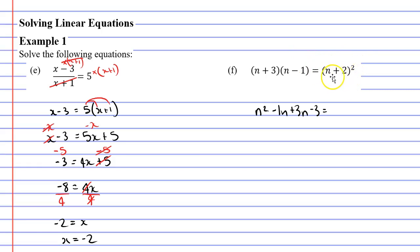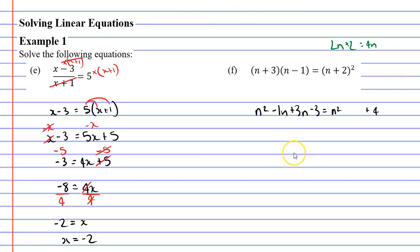Let's expand the next set of brackets: (n plus 2) squared is a perfect square. We square the first term to get n squared, square the last term — 2 squared is 4 — so we get plus 4. We multiply the two terms: n times 2 is 2n, then double it to get 4n as the middle term. Simplifying the left side: n squared, then negative 1n plus 3n gives us 2n, so we have n squared plus 2n minus 3 equals n squared plus 4n plus 4.